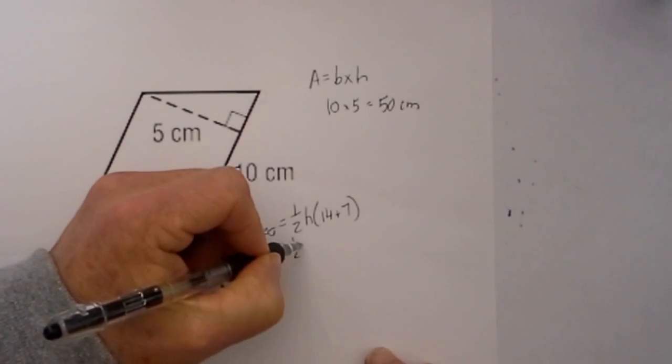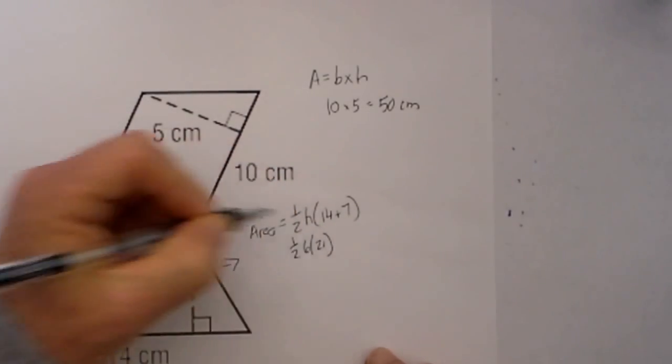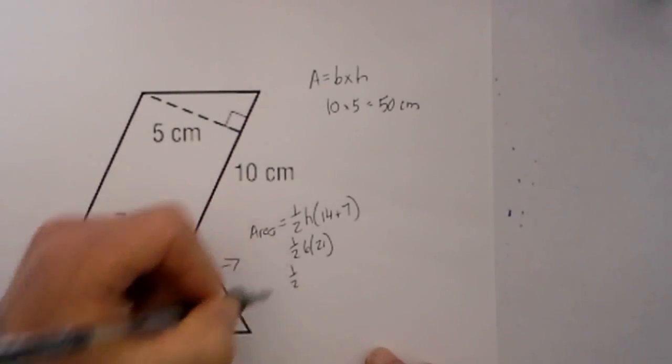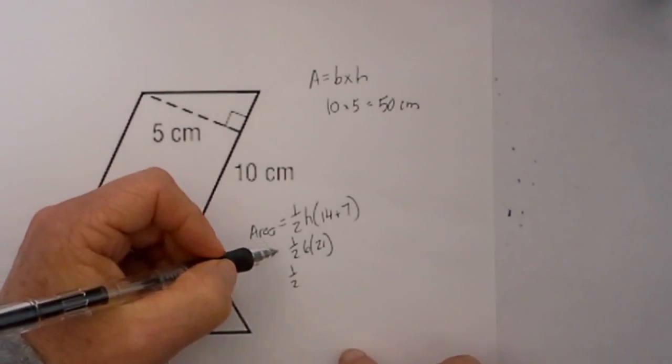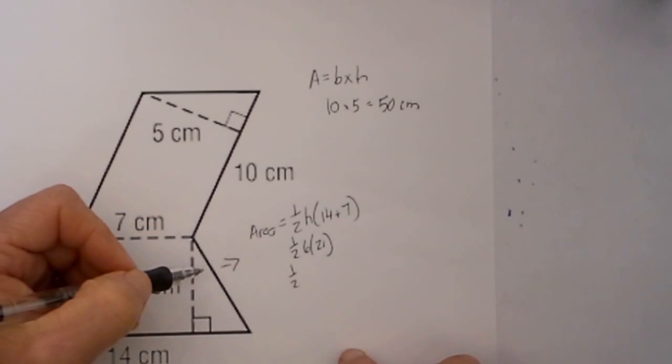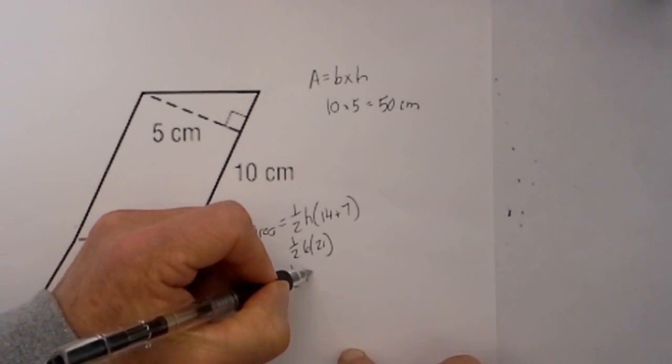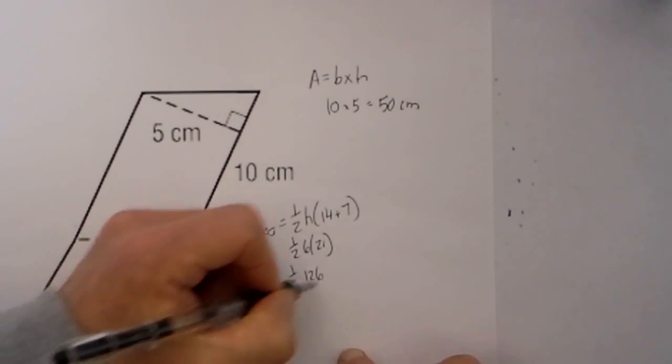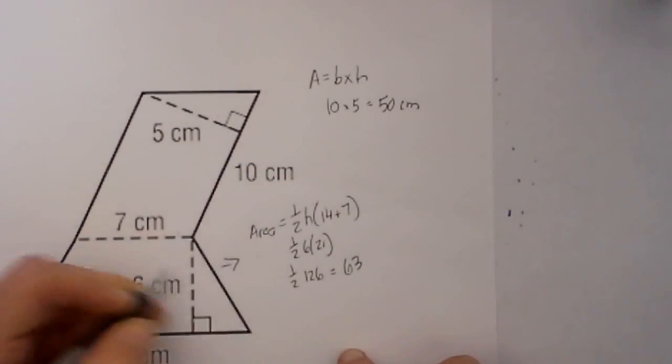So it will be 1/2 times 6 times (14 plus 7 is 21), and that equals 1/2 times 126, which is equal to 63 cm.